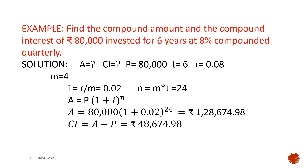Compound interest equals amount minus principal. In this example, amount is 1,28,674.98 and principal is 80,000. The difference of these two gives us compound interest of rupees 48,674.98.